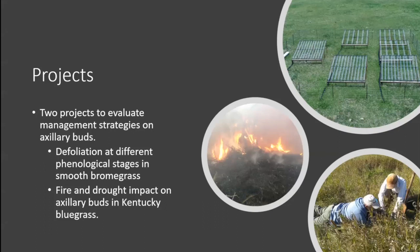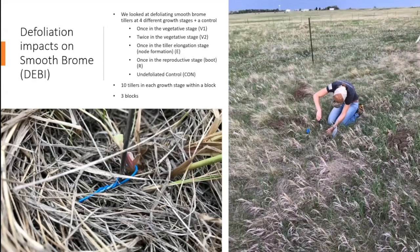I'm going to talk about two projects. The first looks at defoliation at different phenological stages in smooth brome — this came up because I was looking at long-term exclosures at our location and there was a lot less smooth brome outside where it was being grazed, suggesting something was occurring there. The second looks at drought and fire impacts on axillary buds in Kentucky bluegrass. Both projects revolve around axillary buds.